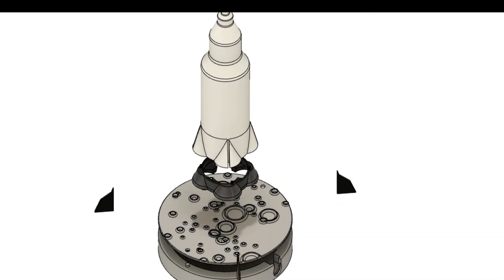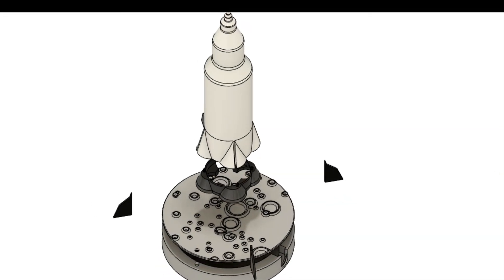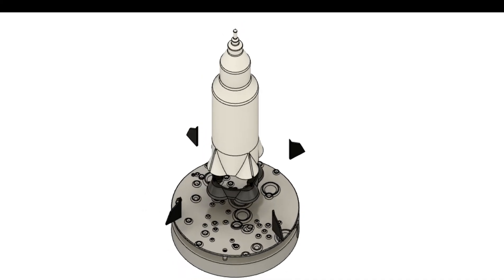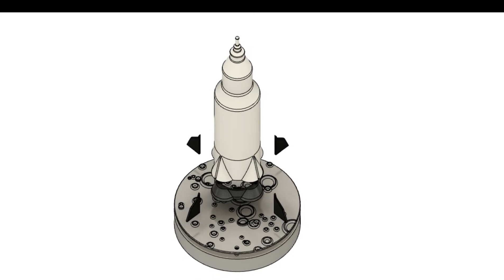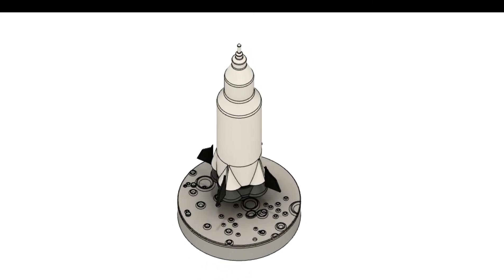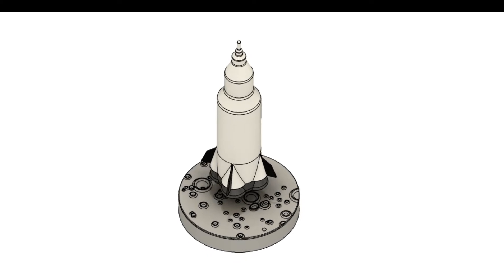After I had all the components complete I loaded them into an animation assembly to make sure that everything would go together smoothly once they were all 3D printed. Performing assemblies like this in design software is really useful because it helps bring to light any design considerations you may have overlooked and it helps in the final assembly process.